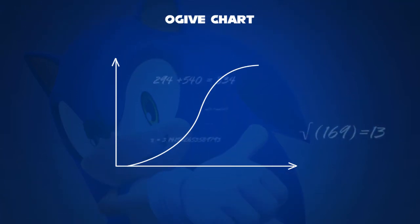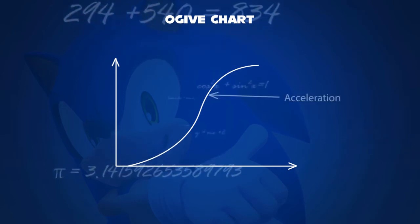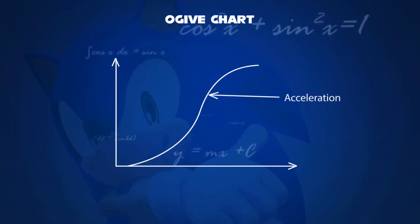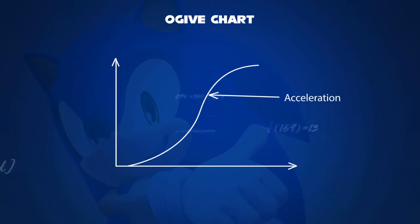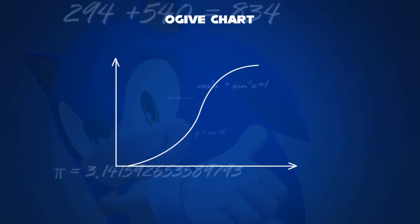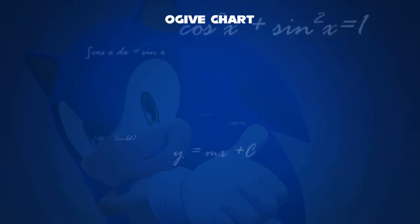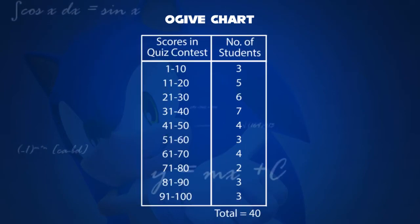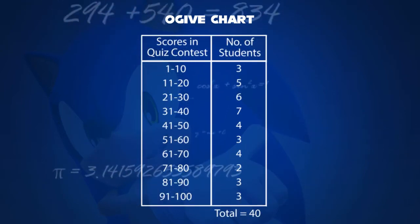In physics, any object that travels with velocity can increase or decrease, termed as acceleration. So you may have seen how the applications may have been used throughout the daily basis. Let us consider scores of a student in either schools or universities, namely quiz contests.